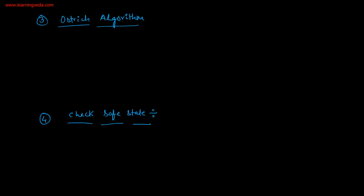The third scheme is the ostrich algorithm. The ostrich algorithm means ignore the deadlock. If deadlock is there, ignore it and try to do something else. So the ostrich algorithm is nothing but ignoring the deadlock.